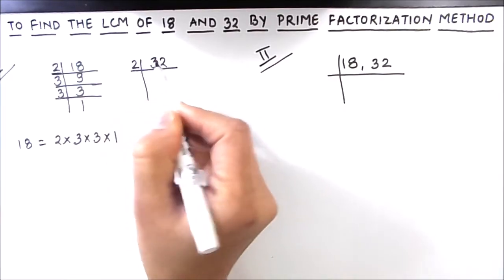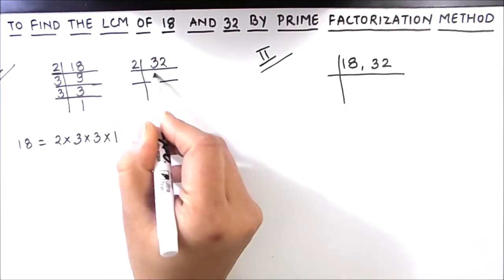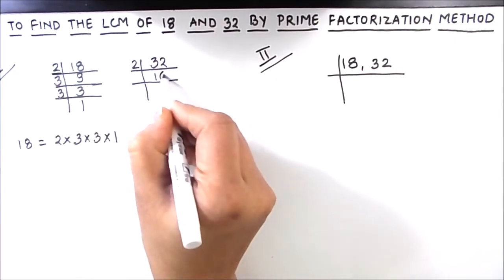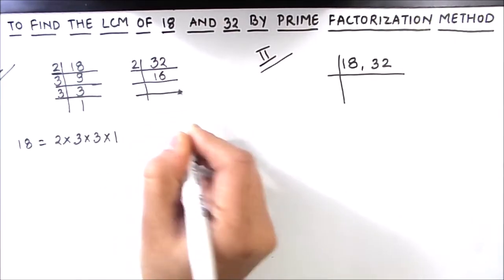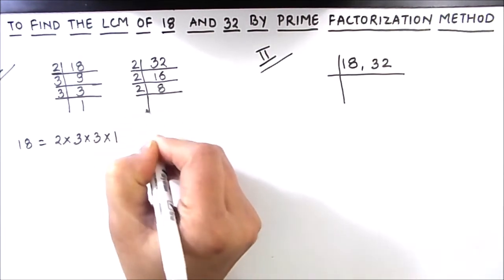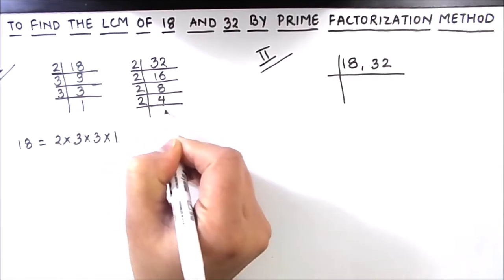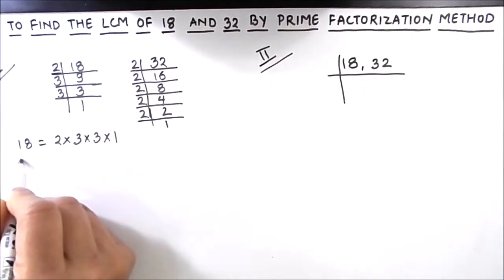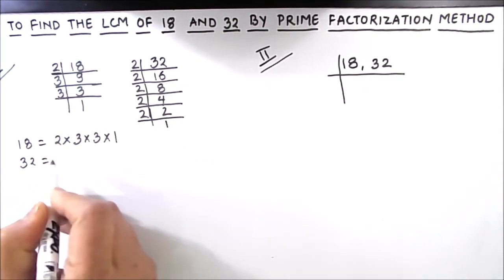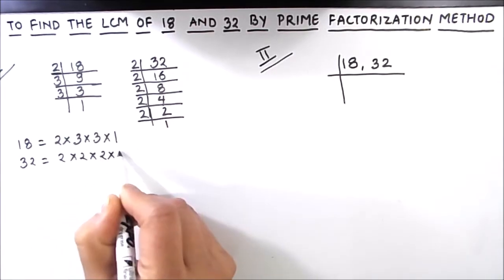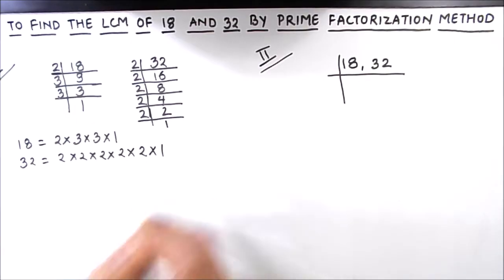Now we find the factors of 32. 32 is an even number, so it is divisible by 2. Dividing repeatedly: 32 ÷ 2 = 16, 16 ÷ 2 = 8, 8 ÷ 2 = 4, 4 ÷ 2 = 2, and 2 ÷ 2 = 1. So the factors of 32 are 2 × 2 × 2 × 2 × 2.